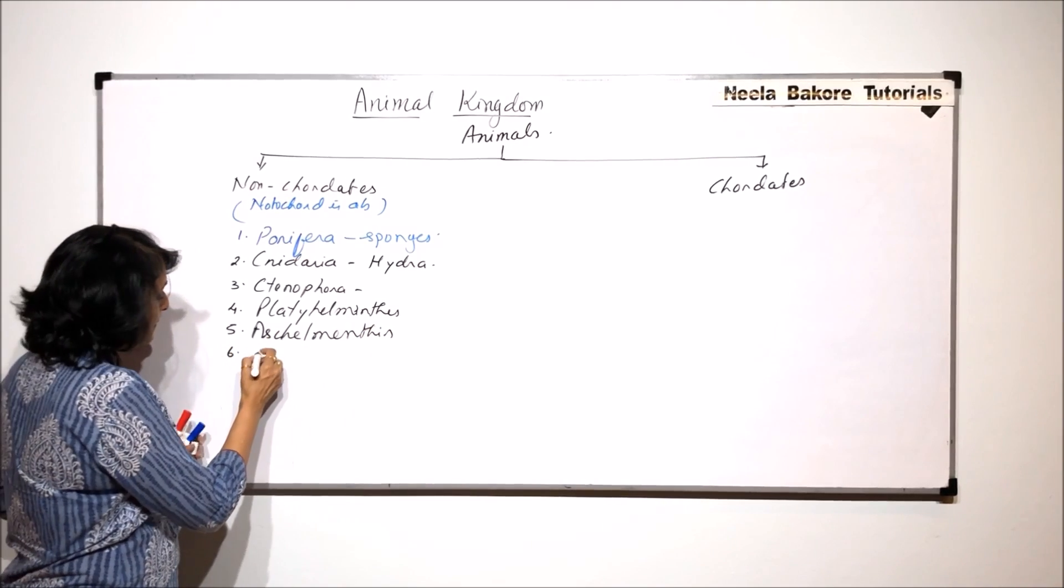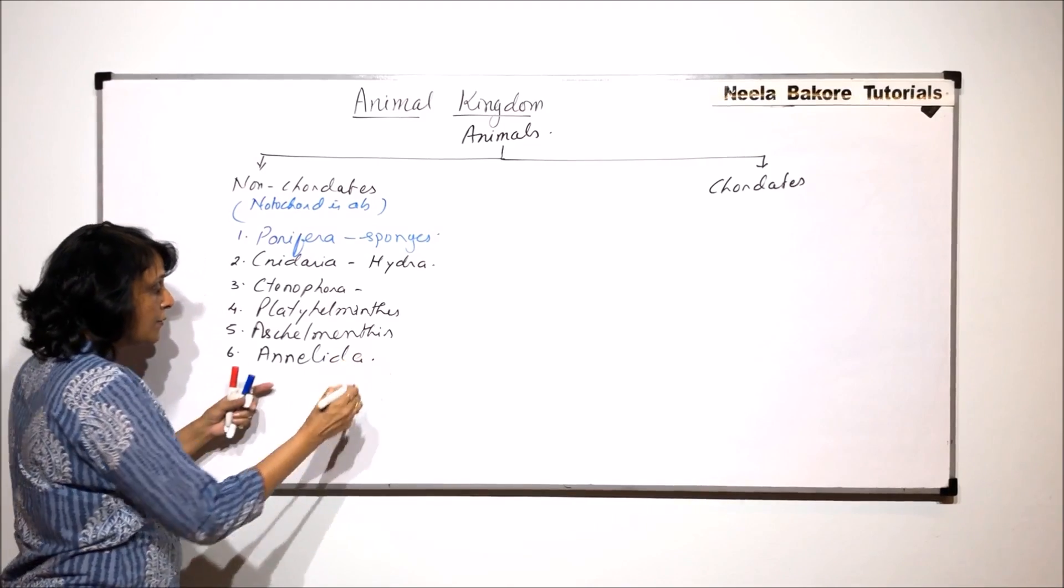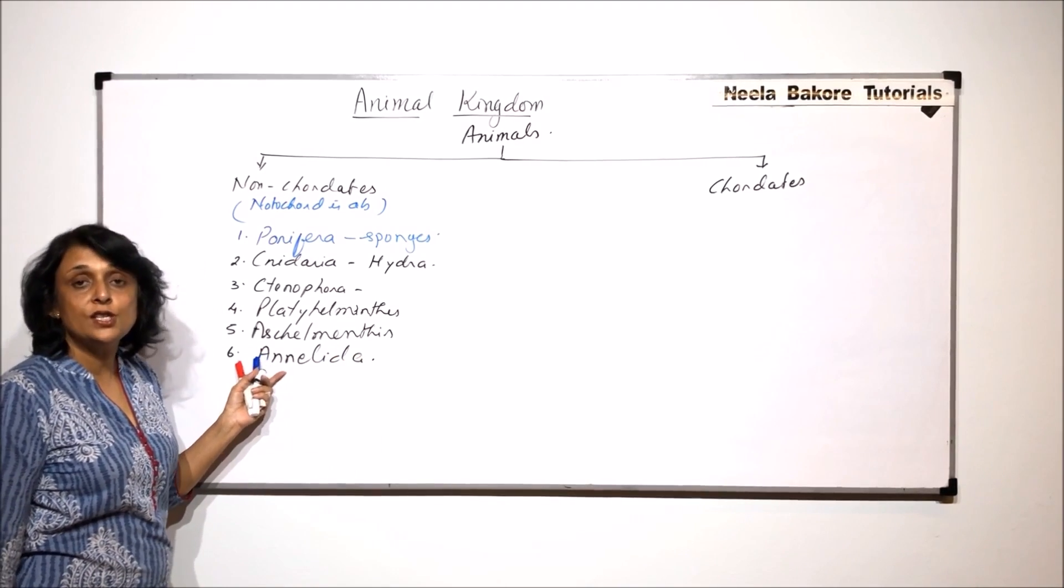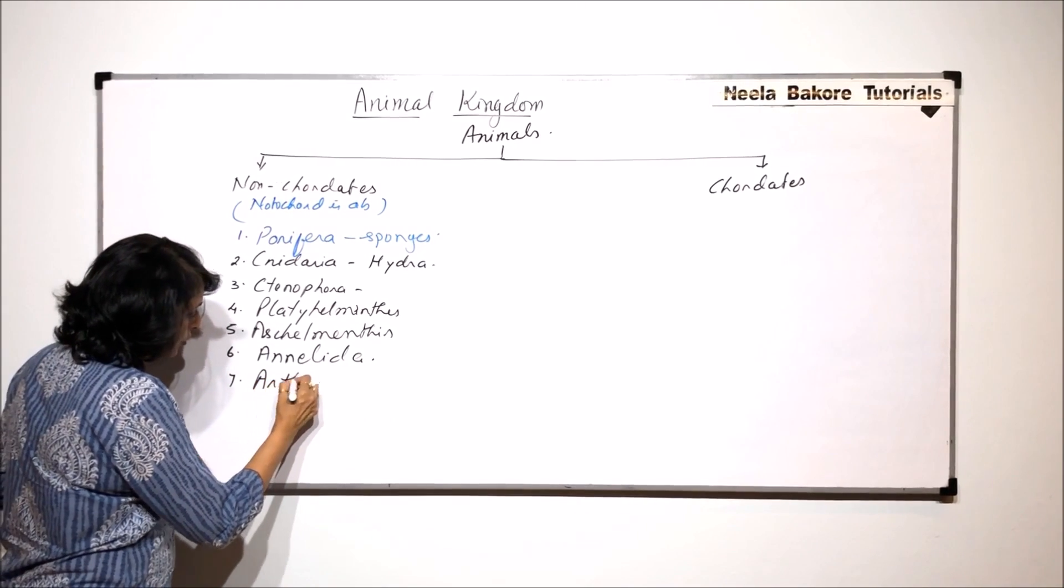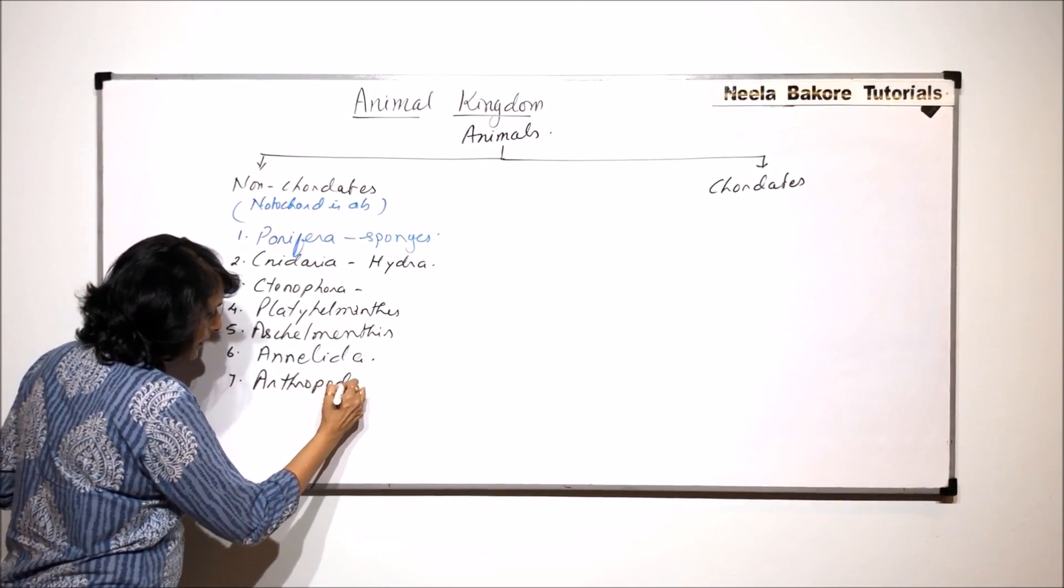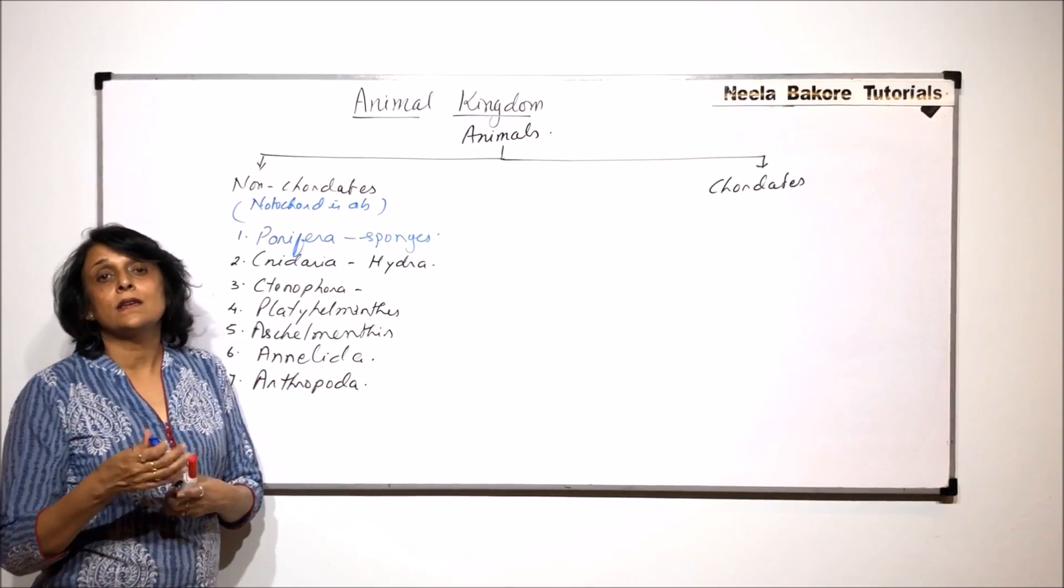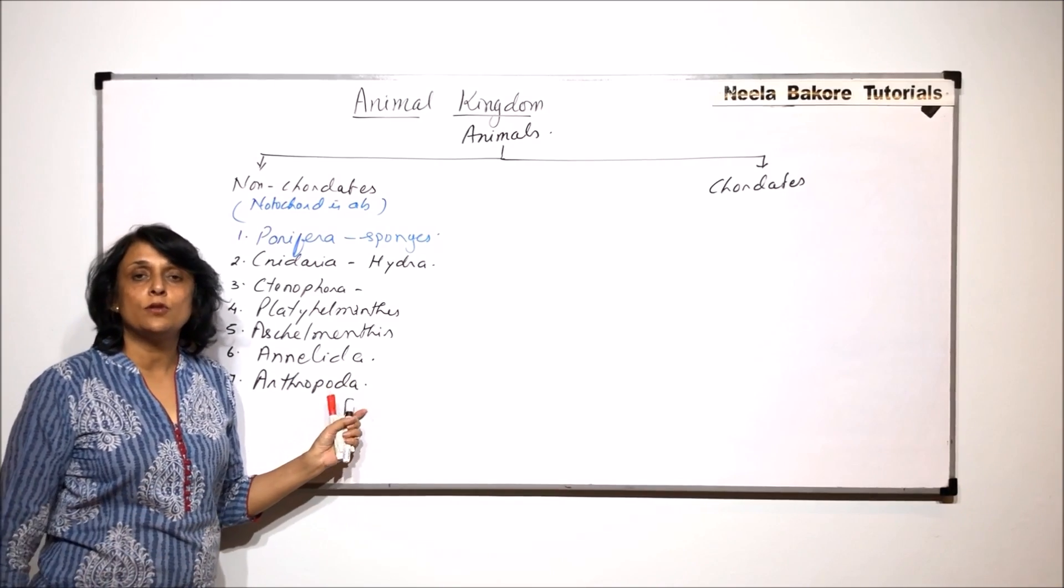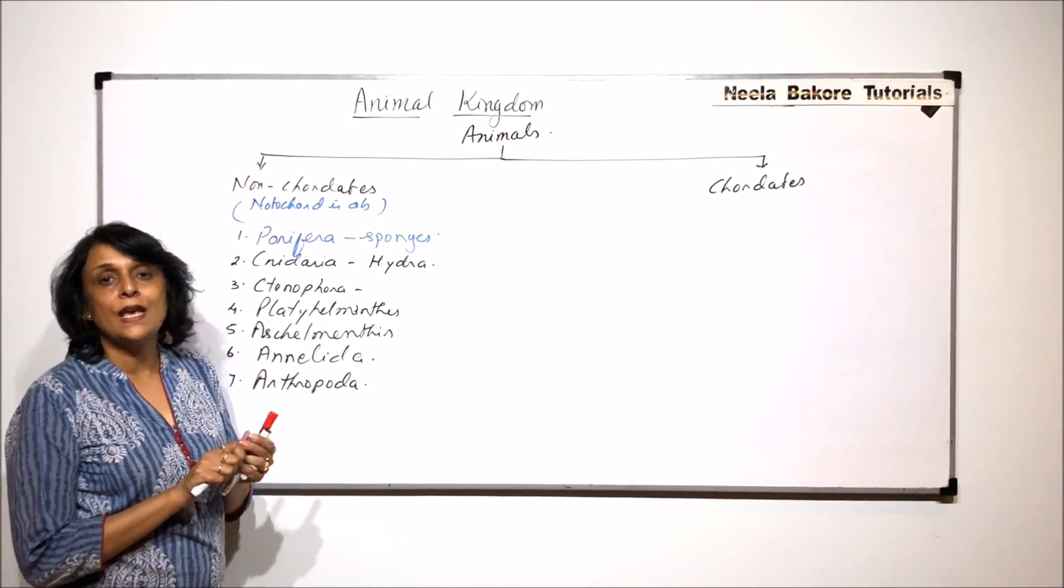The next phylum that we talk about is Annelida. Here we talk of Earthworm, Leeches, Nereis. The seventh phylum is Arthropoda. In Arthropoda there are various classes in which we will be talking about insects, Insecta, Crustaceans, Arachnids.